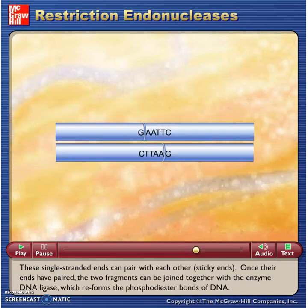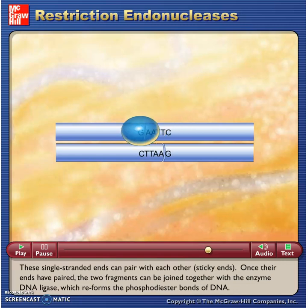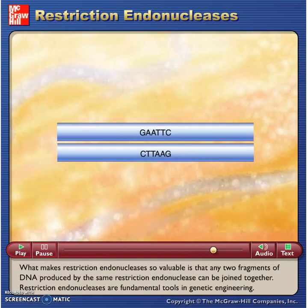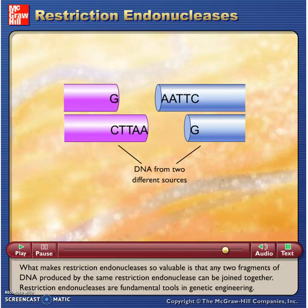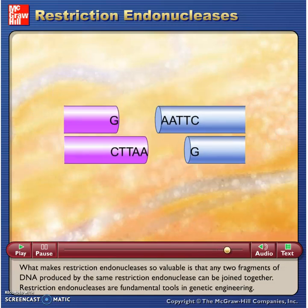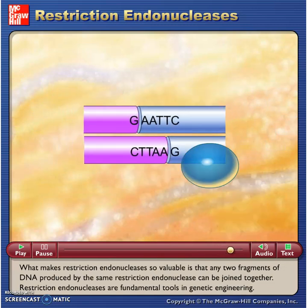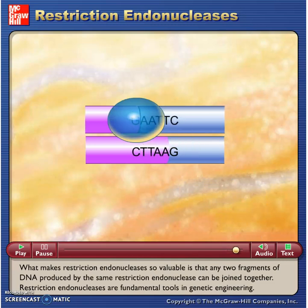Once their ends have paired, the two fragments can be joined together with the enzyme DNA ligase, which reforms the phosphodiester bonds of DNA. What makes restriction endonucleases so valuable is that any two fragments of DNA produced by the same restriction endonuclease can be joined together. Restriction endonucleases are fundamental tools in genetic engineering.